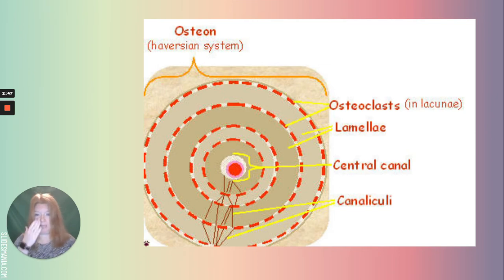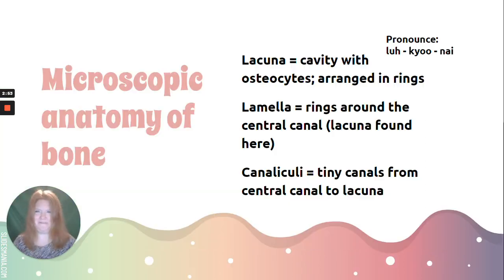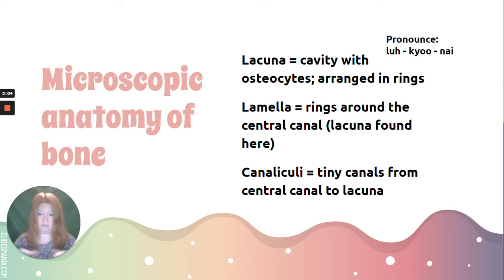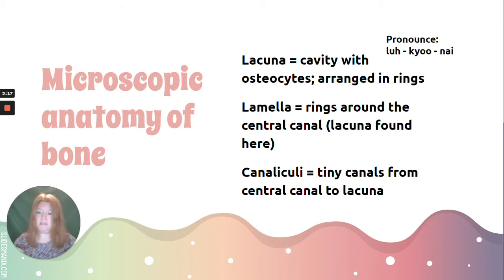Here's the osteon we were just talking about, with some new terms. Lacuna, or lacunae, is the cavity that contains osteocytes, arranged in rings. The osteon looks like rings — like tree rings. Those spaces are the lacunae. Then we have lamella — those are the rings themselves — and the spaces within those rings are the lacunae.